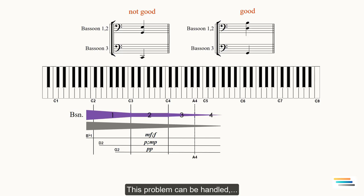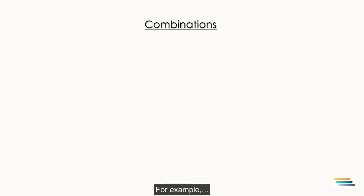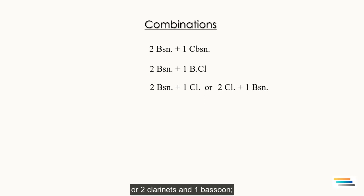This problem can be handled if given to two instruments of the same timbre and the third instrument of another timbre. For example, two bassoons and one contrabassoon, two bassoons and one bass clarinet, two bassoons and one clarinet, or two clarinets and one bassoon, two bassoons and one English horn, and so on.